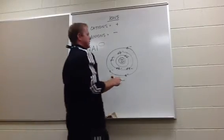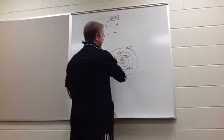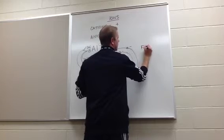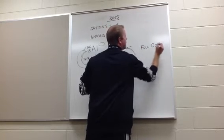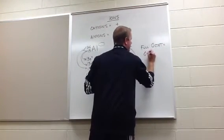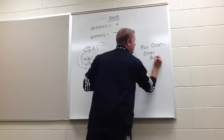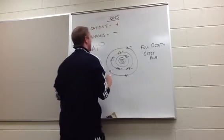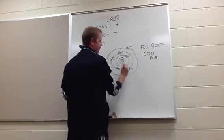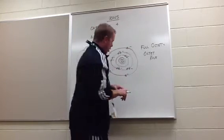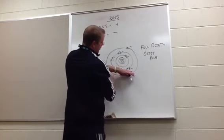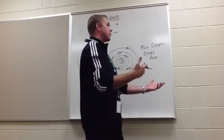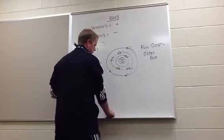Now we have a question to ask ourselves. There are eight electrons that fit in the outermost level, and in order for things to be stable, atoms want to obtain a full octet — the octet rule. Meaning in their outermost level they want eight electrons. Aluminum has a decision: it can gain five more, or it could lose these three and have the eight on the inside of the second shell. Gain five or lose three — the easier thing to do is to lose three.